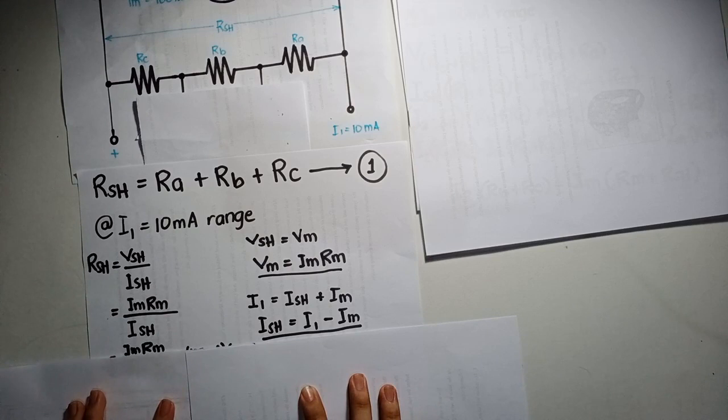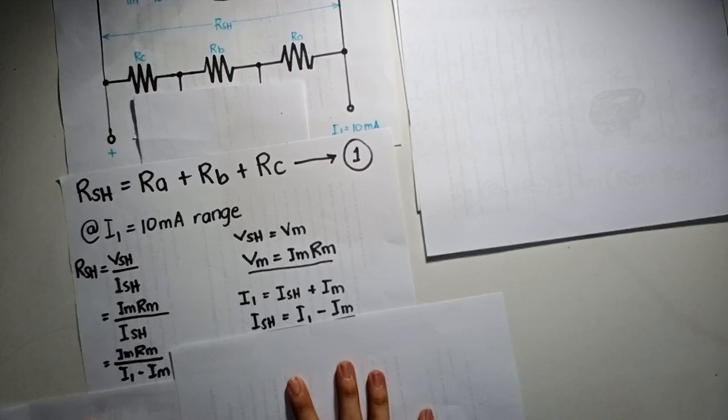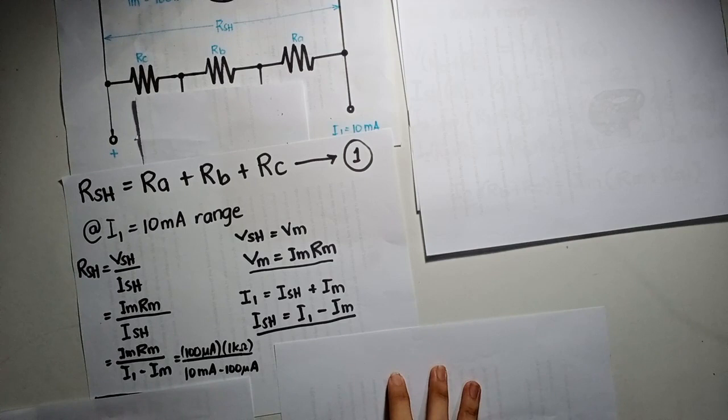Substitute ISH. Now, substitute the given values. Now, we have the value for RSH, which is 10.10 ohms.